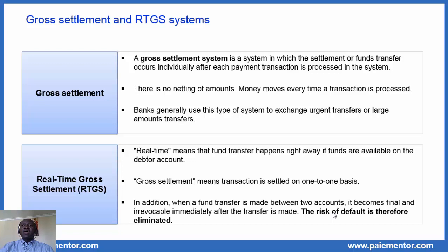Banks generally use this type of system to exchange urgent transfers or large amount transfers. In fact, banks do that in the context of the so-called RTGS system. In RTGS, we have real-time in addition to gross settlement. Real-time means that funds transfer happens right away if funds are available on the debtor account. Gross settlement means that transactions are settled on a one-to-one basis.